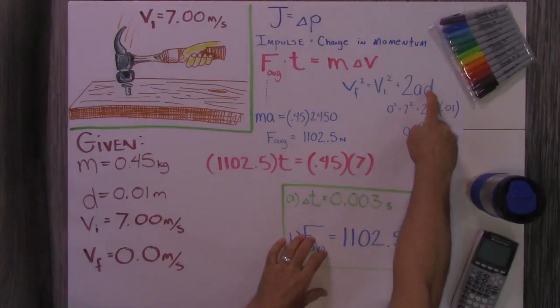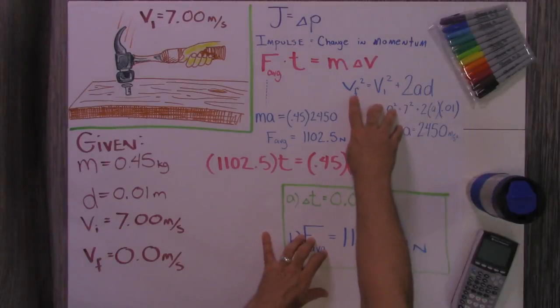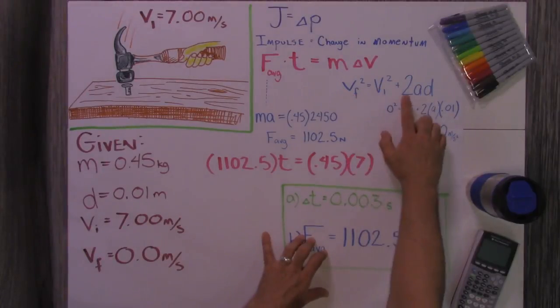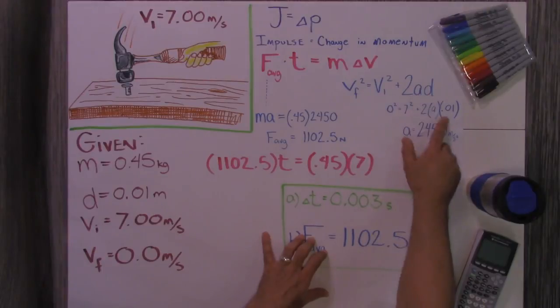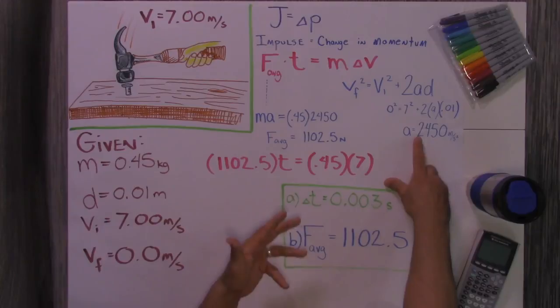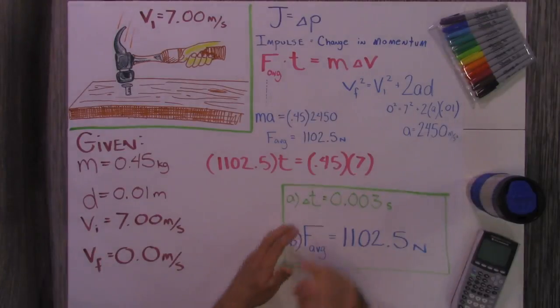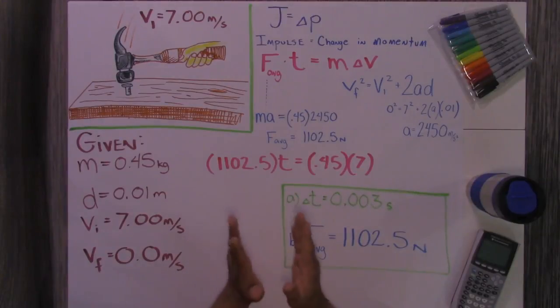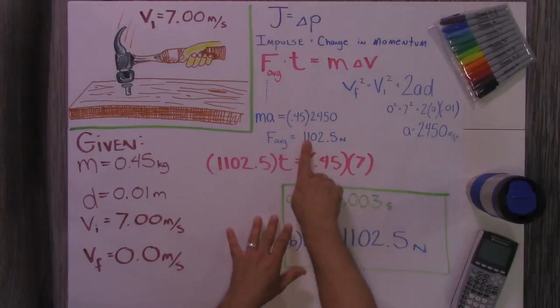I knew the displacement that it traveled, put it into this formula. V final squared equals V initial squared plus 2AD, and I solve for acceleration. That is a lot of acceleration. I got 2,450 meters per second squared. Plug that into Newton's second law that says force is equal to mass times acceleration. I know the mass, I know the acceleration, I got the force.